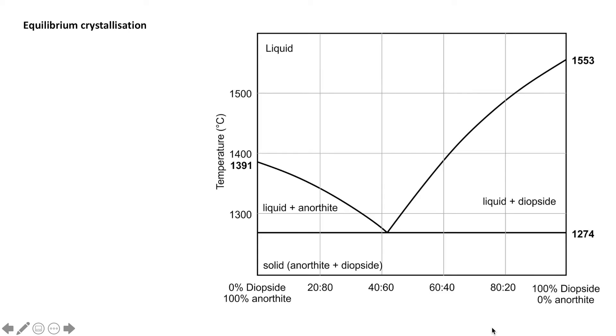So here we're looking at a phase diagram of diopside and anorthite. As we've learned previously, we have our solid at the bottom here. Anything below this is 100% solid. And here we have two lines, two liquidus lines. Anything above here is entirely liquid.